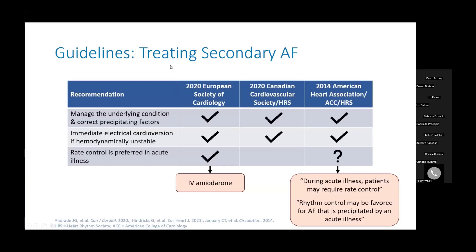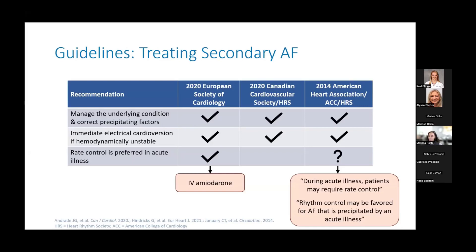Looking at the guidelines: European guidelines were updated in 2020, Canadian guidelines were updated in 2020, and American guidelines were published in 2014 — though the updates don't address secondary AFib management. These are the last American guidelines related to AFib caused by an acute illness or secondary cause. All three guidelines recommend managing the underlying condition and correcting precipitating factors, and recommend electrical cardioversion immediately if a patient becomes hemodynamically unstable.